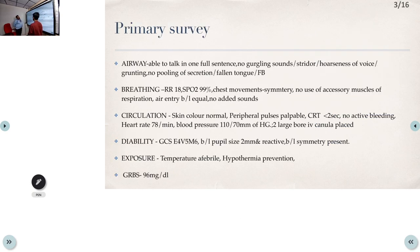In the primary survey, airway-wise the patient was able to talk in one full sentence with no gurgling, no grunting, no pooling of secretion, so the airway was patent. Breathing-wise, respirations 18 per minute, saturation 92% with bilateral equal rise in chest. Breathing is also normal. Circulation - anything positive? No. Most importantly clear, no hypoglycemia.